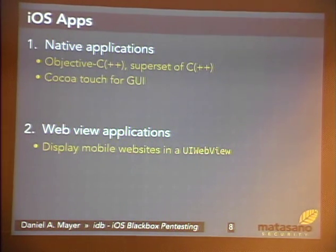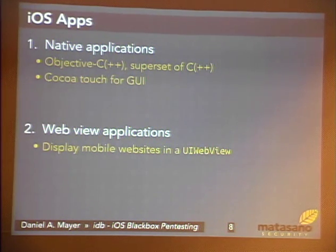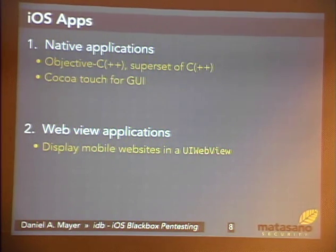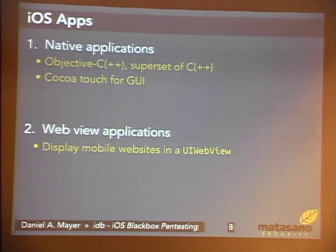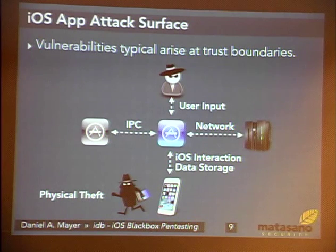iOS applications come in two kinds. The first ones are apps which are fully written in native code — Objective-C, C++, or regular C. The other ones are web view applications, where a company says 'we have a mobile website already, so let's just make an app which does nothing but have a web view and display websites in it.' These are actually fairly common, but they're both native applications. When we look at those from a pen testing perspective, we try to figure out what the attack surface is.